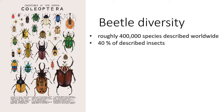The order Coleoptera is the largest order in the entire animal kingdom. One of the smallest beetles is only a quarter of a millimeter in length, and the largest known beetle can reach 20 centimeters long.